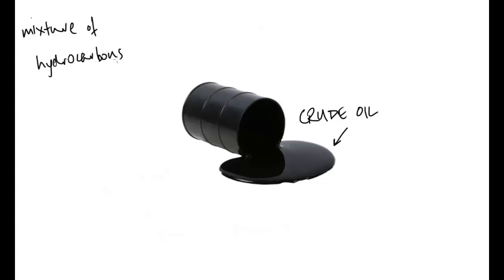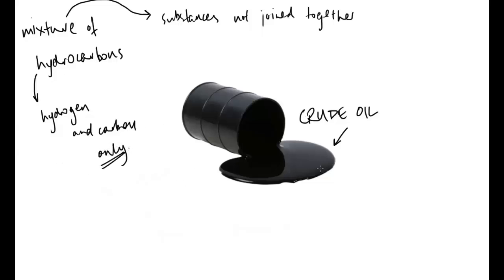So first of all the term mixture means things that are not joined together. Substances not joined together and that's really important because that means later on the things this is made of, this mixture of hydrocarbons, can be separated out and used. The term hydrocarbons means they contain only hydrogen, the hydro, and carbon. The key thing here is they only contain hydrogen and carbon, there is nothing else in them at all.